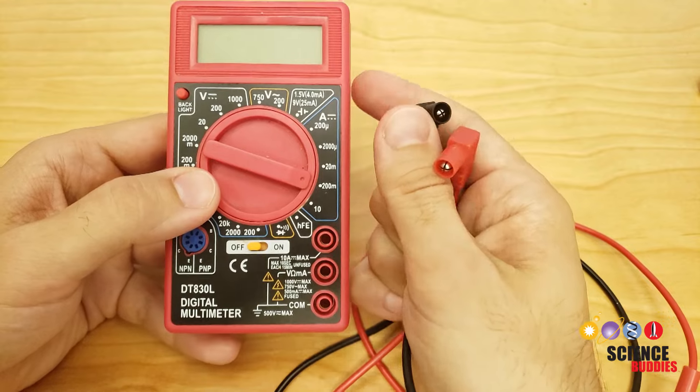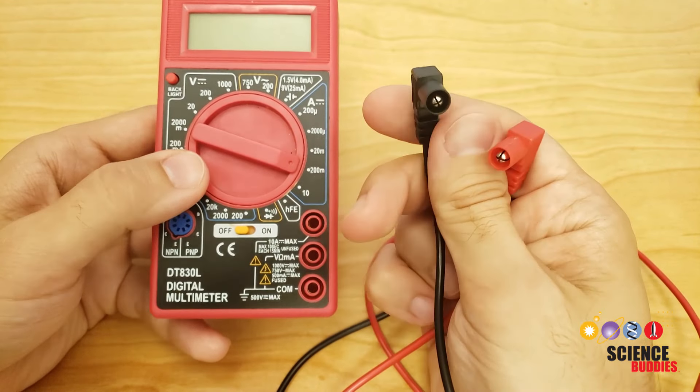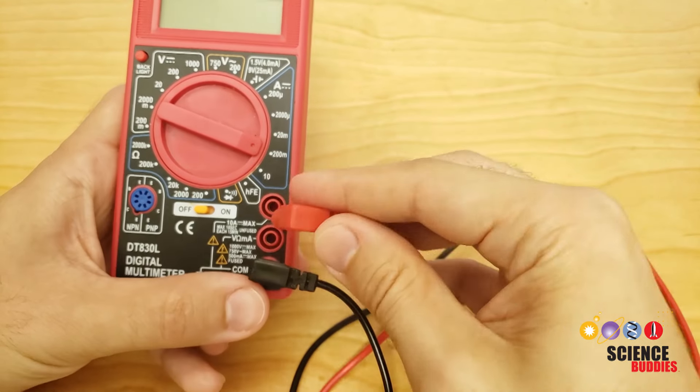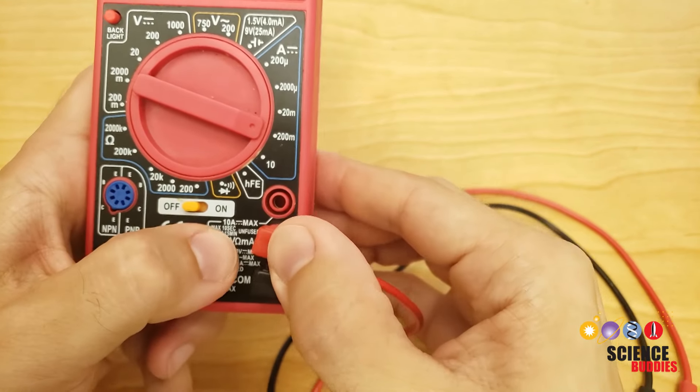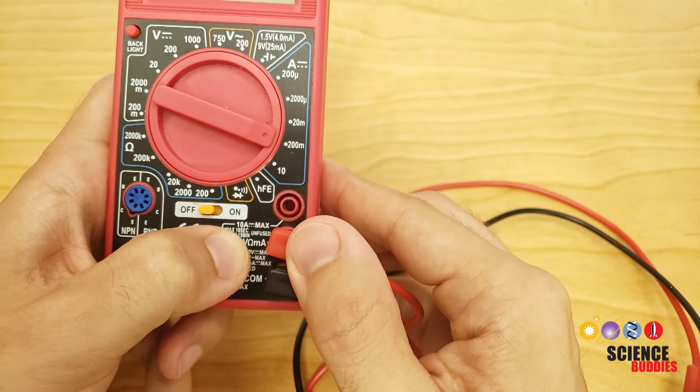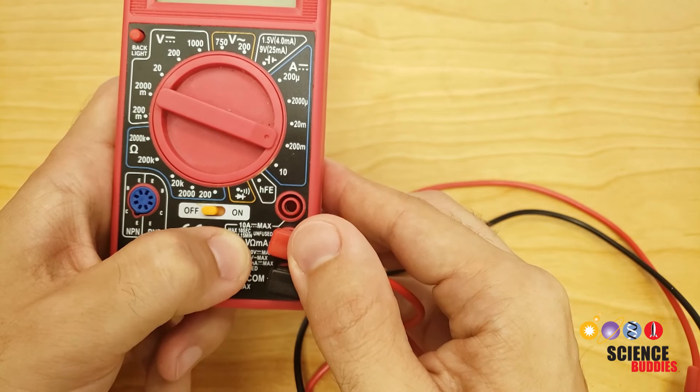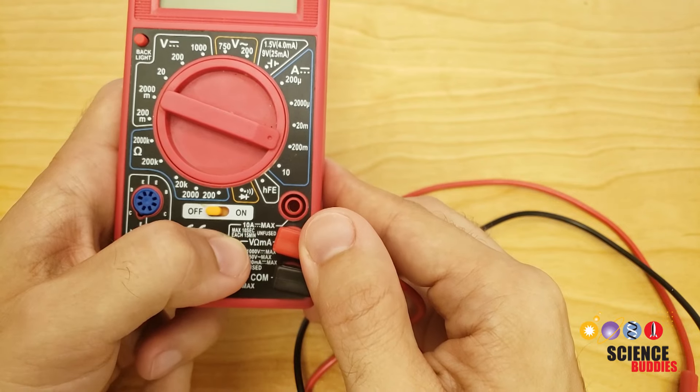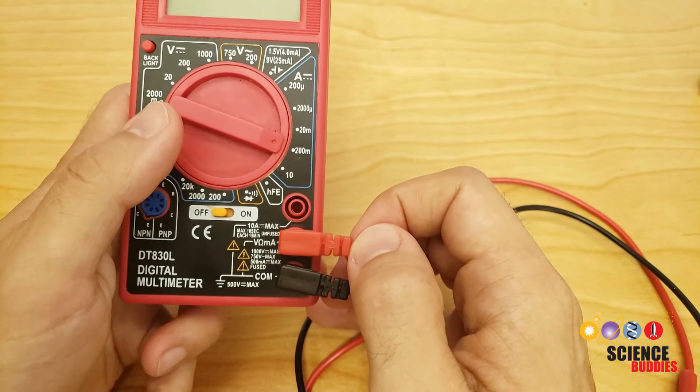First, let's connect the probes to the multimeter. You are going to take the black probe and plug it into the port labeled COM, and the red probe and plug it into the port labeled V, omega. That's the capital Greek letter omega, which stands for ohms, the unit to measure resistance, which we are not using in this project, and MA, which stands for milliamps, the unit of current that we will be measuring in this project.